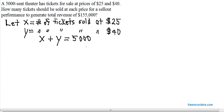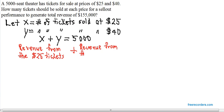If you're ever having trouble finding the second equation, ask yourself the question, what's the only information in the problem we haven't used yet? And that is the total revenue of $155,000. So that means the revenue from the $25 tickets plus the revenue from the $40 tickets has to equal your total revenue of $155,000.